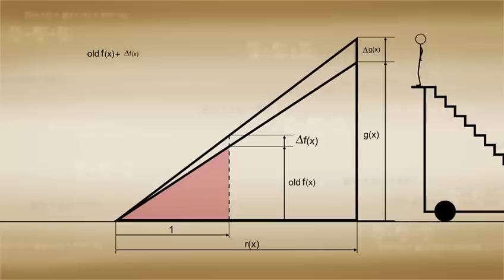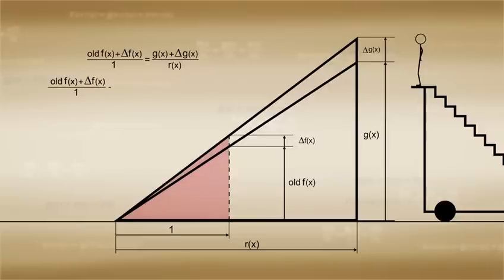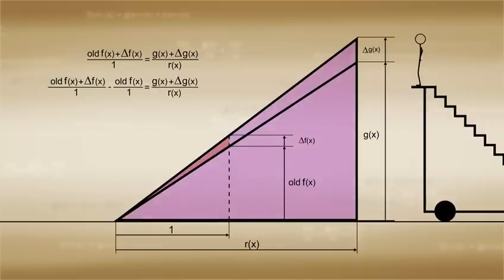f plus delta f over 1 is equal to g plus delta g over r. Subtracting out the ratios of smaller triangles on each side: f plus delta f over 1 minus f over 1 is equal to g plus delta g over r minus g over r.